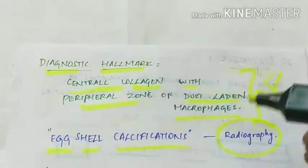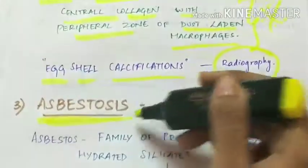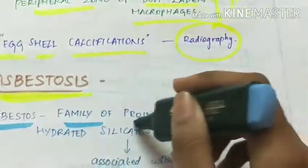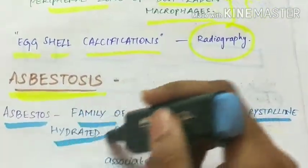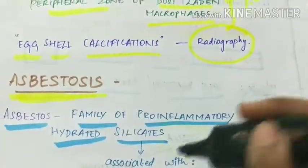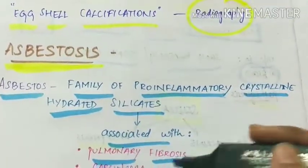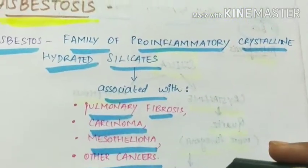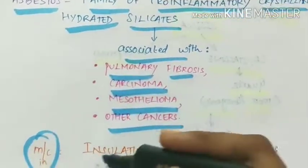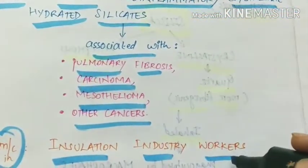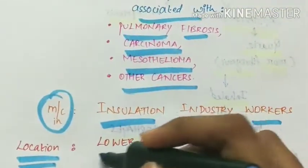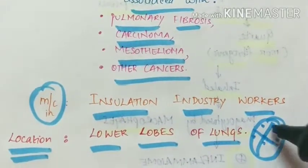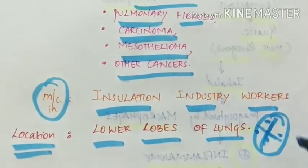The third pneumoconiosis is asbestosis. Asbestos is a family of pro-inflammatory crystalline hydrated silicates associated with pulmonary fibrosis, carcinoma, mesothelioma, and other cancers of the lung. This is most common in insulation industry workers. It involves the lower lobes of the lung — this is the only pneumoconiosis which involves the lower lobe of the lung.